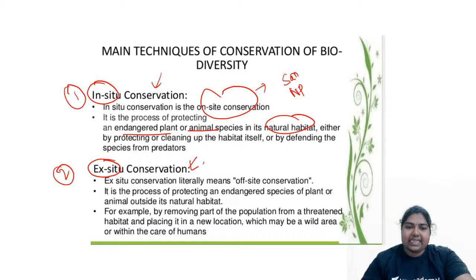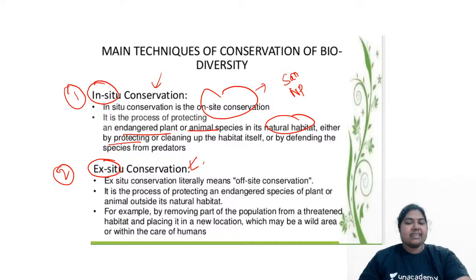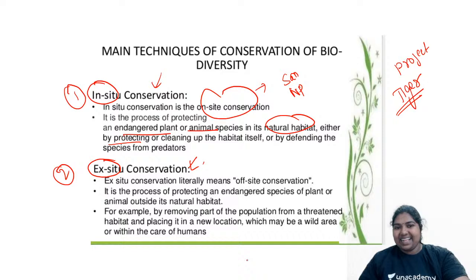In in-situ conservation, your endangered plant or animal is preserved within its natural habitat. You are protecting them in the site itself, not in a laboratory. For example, a sanctuary — like the Bandipur sanctuary or Mudumalai sanctuary. For the tiger, this is how it is preserved through Project Tiger — wherever they are living, you protect them. That is your in-situ conservation.